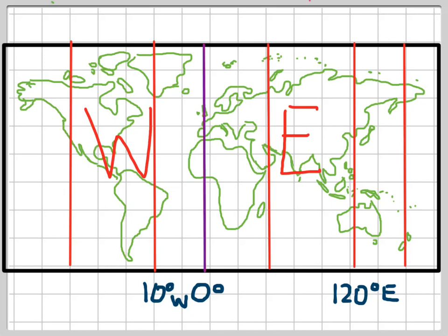So we've just changed the colour of the prime meridian there so we can see the eastern hemisphere and the western hemisphere, and the numbers getting larger and larger as they move away from zero.